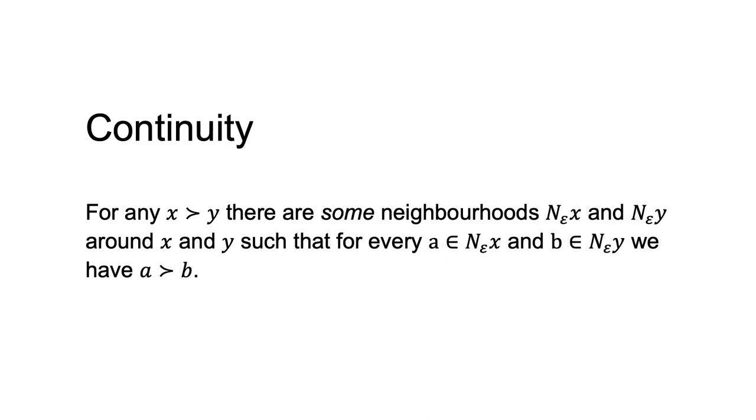To put this another way, a preference relation is continuous if, for any x strongly preferred to y, there are some neighbourhoods n epsilon x and n epsilon y around x and y, such that for every a in n epsilon x and b in n epsilon y, we have a strongly preferred to b.